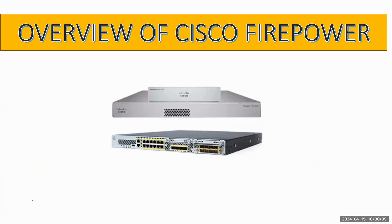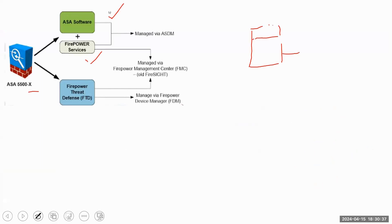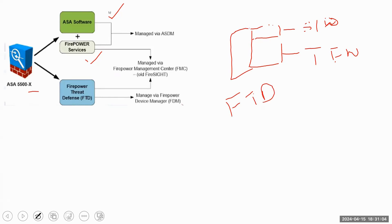What Cisco specifically did was take the existing ASA box — models like the ASA 5500-X — and integrate Firepower services on top of the same ASA software. So the ASA box continues to work as a traditional stateful firewall, and on top of that, Cisco Firepower services are installed as software. When these two are merged together on the same box, the combined result is called FTD — Firepower Threat Defense.